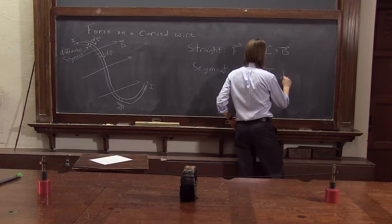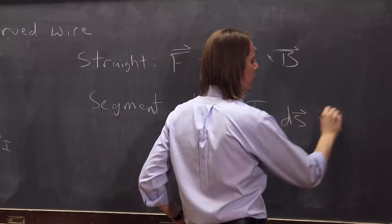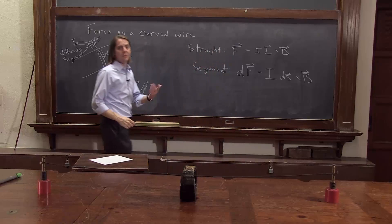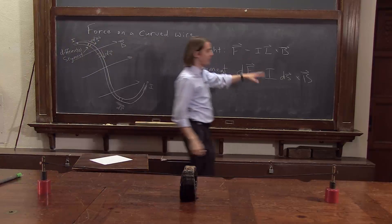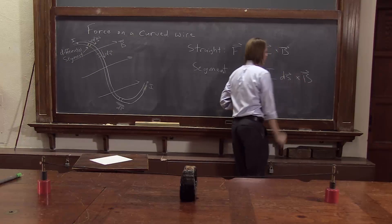So I dS cross with B, whatever the B field happens to be, wherever you are. So pretty much the same thing. We just replaced L with dS.